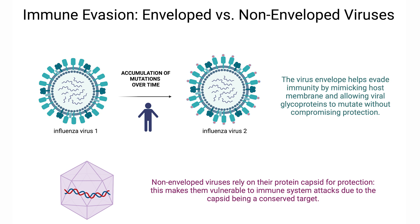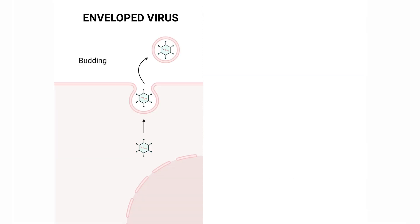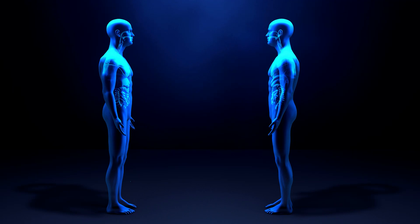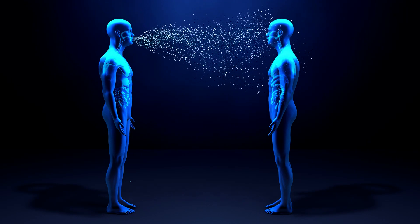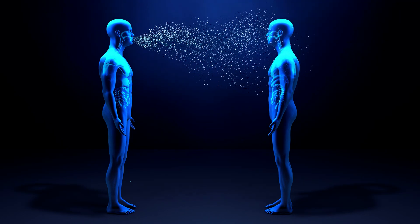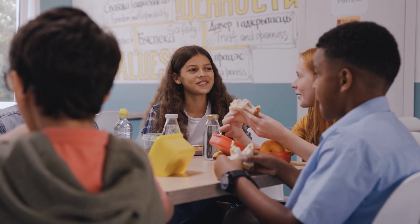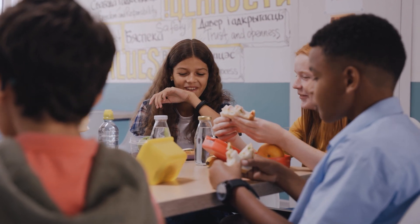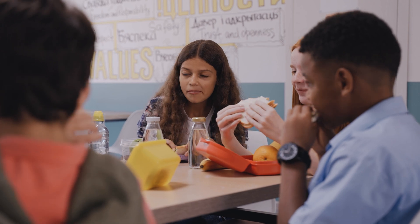Enveloped viruses exit host cells more gently through budding, while non-enveloped viruses cause cell lysis, bursting the host cell and releasing debris that attracts immune cells. Enveloped viruses typically spread through close contact, respiratory droplets, or bodily fluids because they require moist environments to survive. Non-enveloped viruses, in contrast, are often transmitted via contaminated surfaces, water, or food due to their resilience.